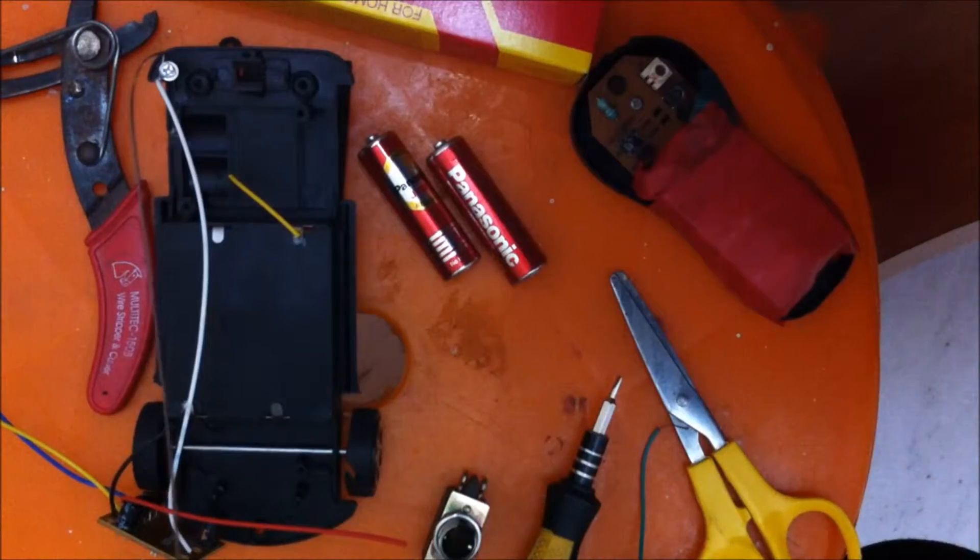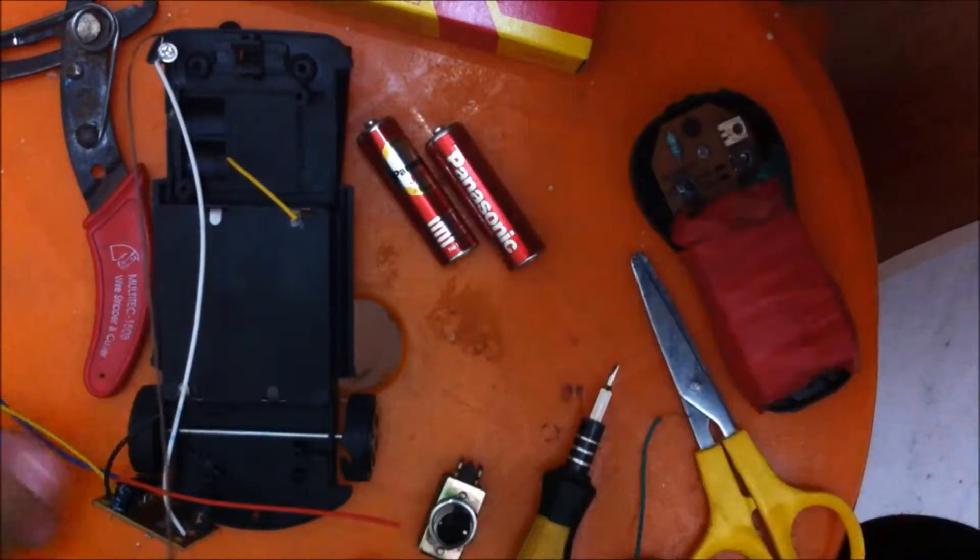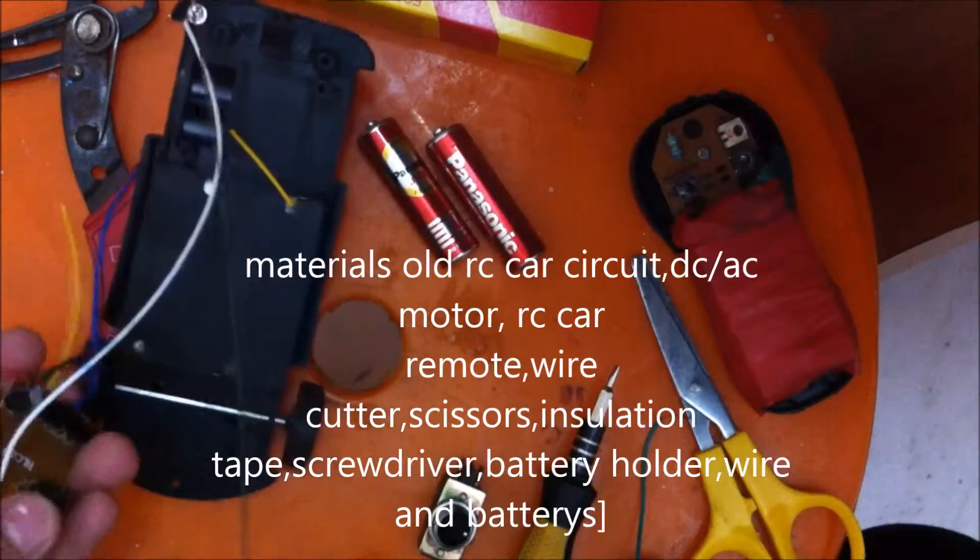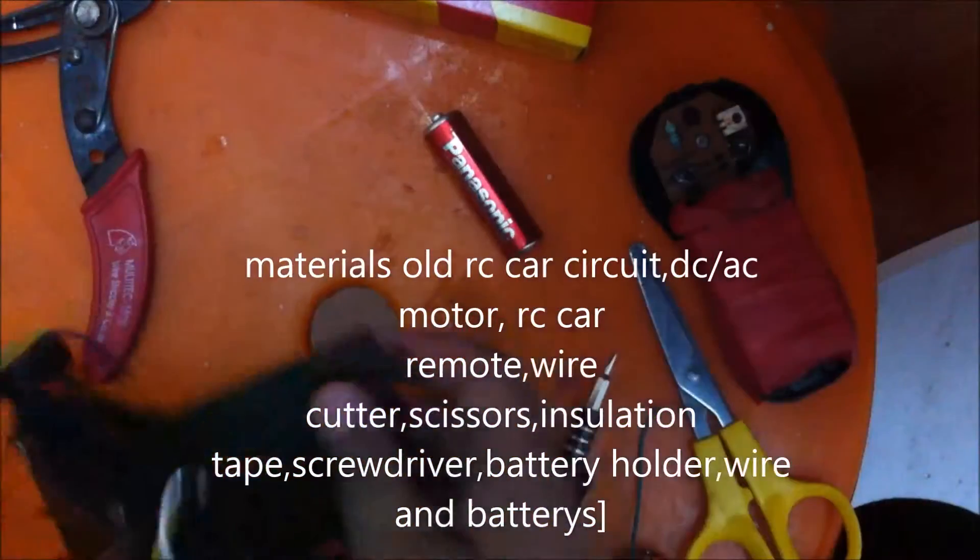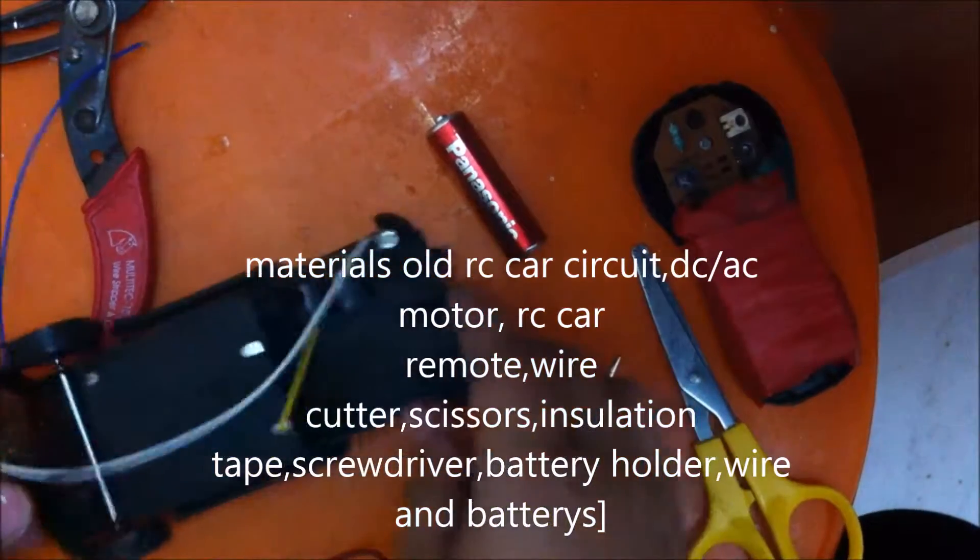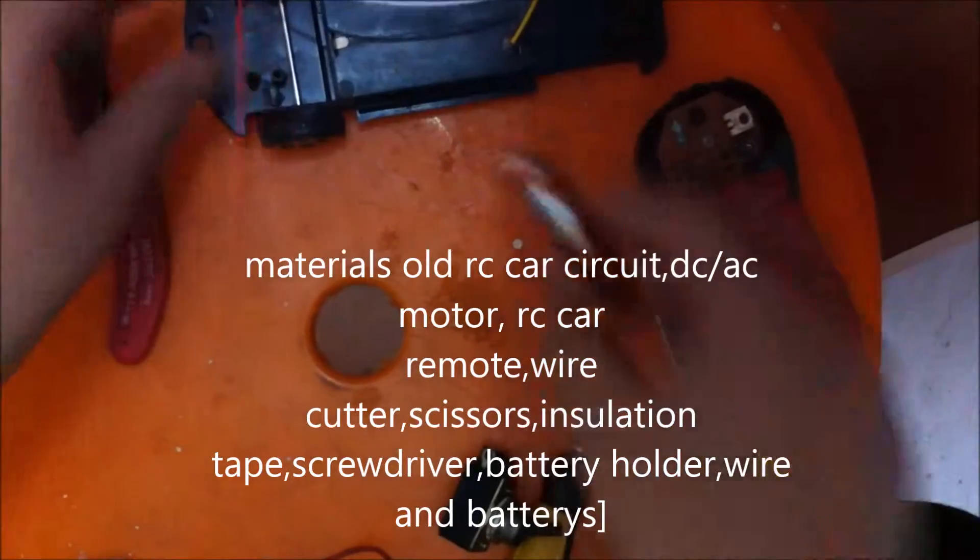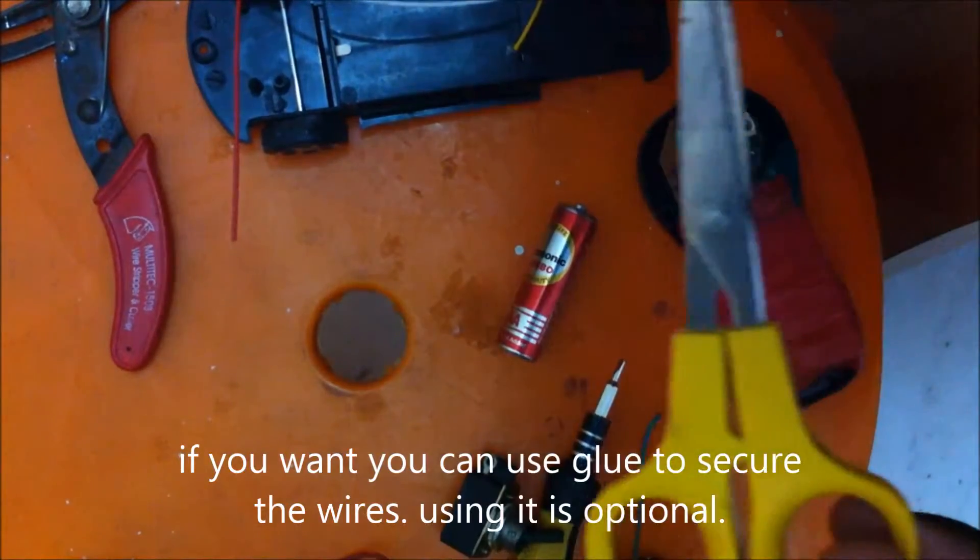Materials to include: we have an RC car remote, an RC car kit, some glue, some batteries, and a scissor.